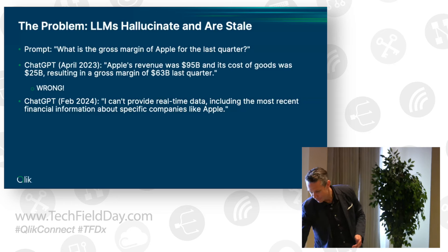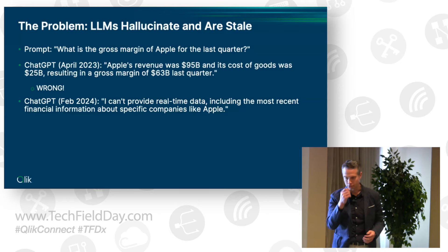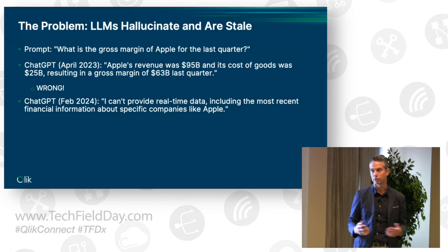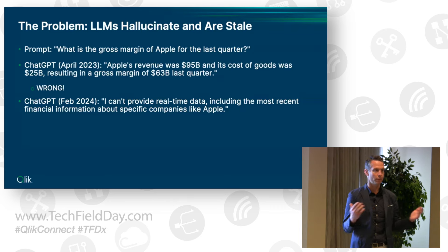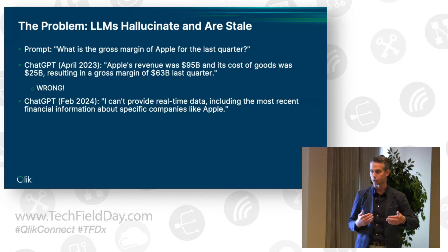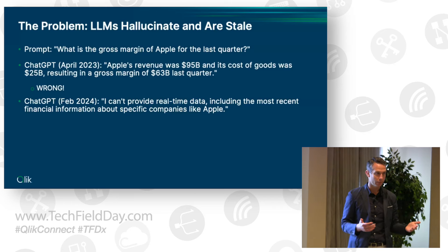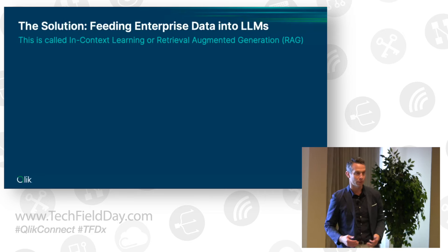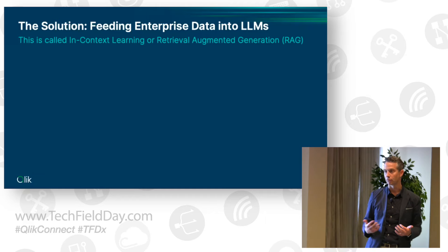These are the big challenges with large language models — let's cover why these answers are actually incorrect. In April of 2023, ChatGPT's knowledge cut off in September of 2021, so the information was stale. It couldn't have known last quarter's gross margin, so it just made up the numbers. And if anyone picked out the math problem: 95 billion minus 25 billion does not equal 63 billion. The way to get around this is by feeding contextual data into the large language model — something called in-context learning or retrieval augmented generation.